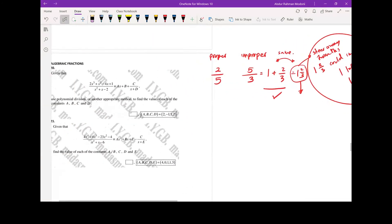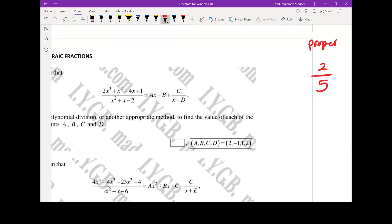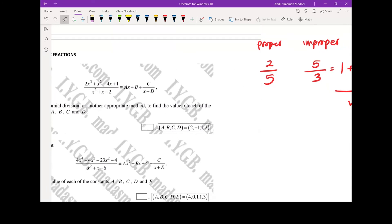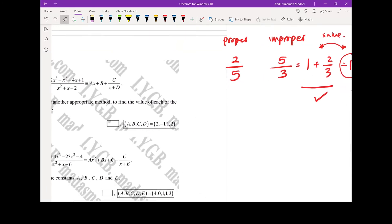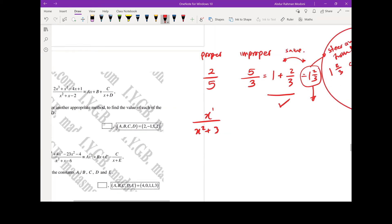The same can be said for algebra as well. So we've got proper algebraic fractions where the numerator has a lower degree, is a lower order polynomial than the denominator. I.e., something like this: x over x squared plus three. The numerator has a power of one, the denominator has a highest power of two, so the denominator is greater.